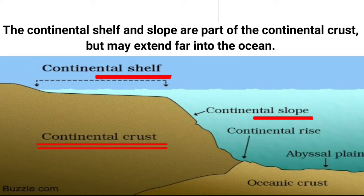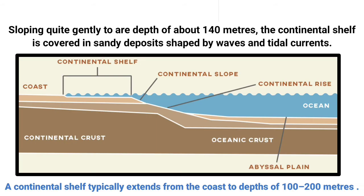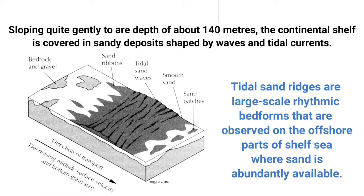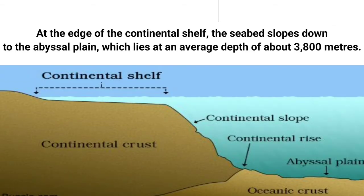The continental shelf slopes quite gently to a depth of about 140 meters. It is covered in sandy deposits shaped by waves and tidal currents. At the edge of the continental shelf, the sea bed slopes down to the abyssal plain.